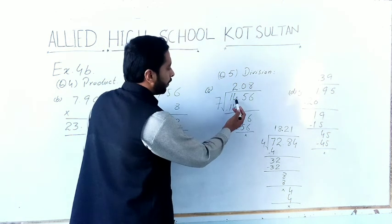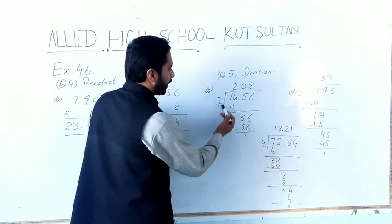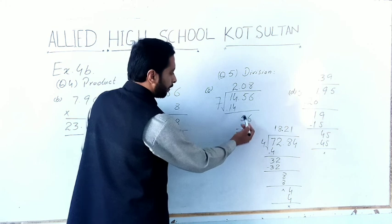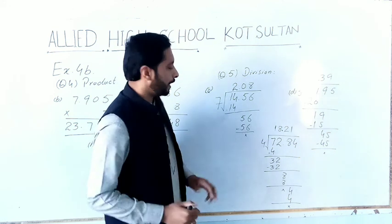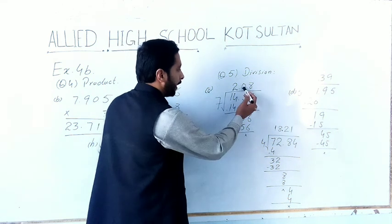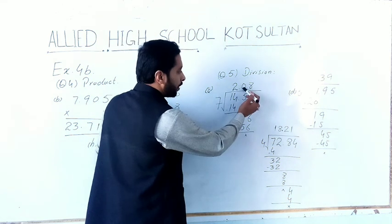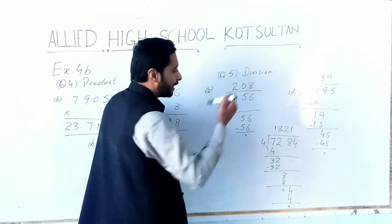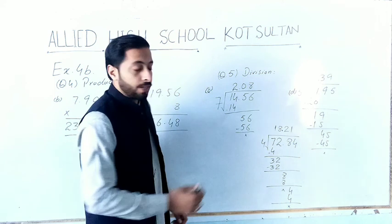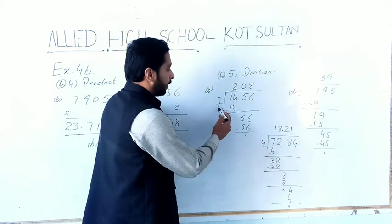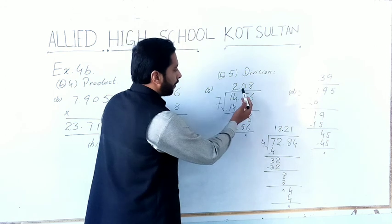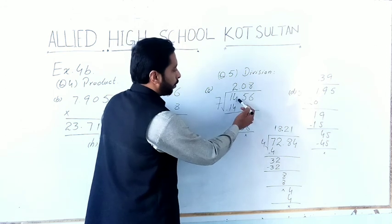Part B is 14.56 divided by 7. 7 × 2 = 14, so 14 ÷ 7 = 2. Next digit is 5, and 5 is less than 7, so we place 0 here. We bring down the next digit and it becomes 56. 7 × 8 = 56. We place the decimal point after two digits and the answer will become 2.08.